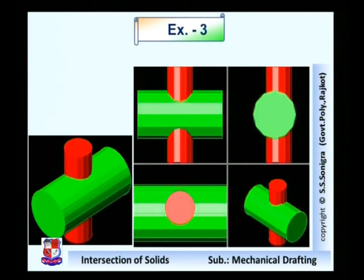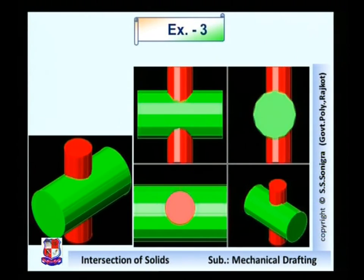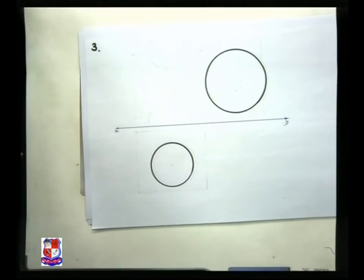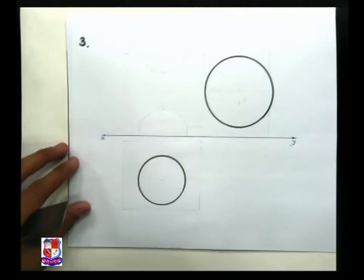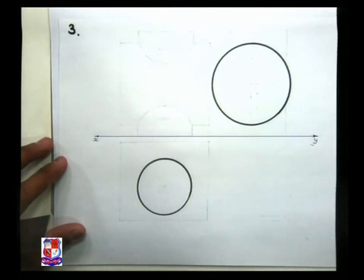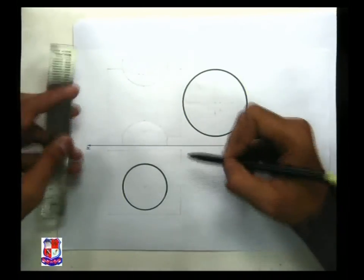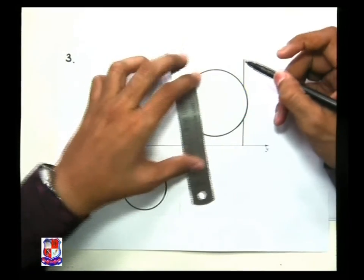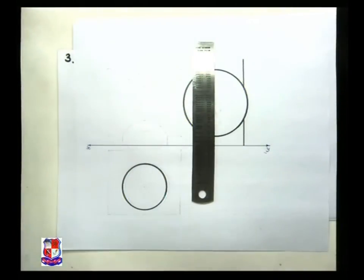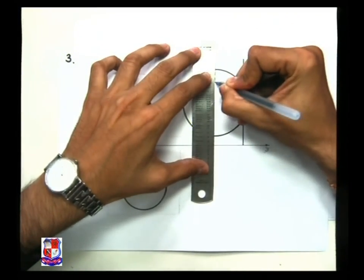For that, first we draw the first cylinder — the circle which would appear as a circle — having diameter as given in the data, that is 50mm. Similarly, we draw three views of this cylinder. We also draw three views of the other cylinder with its axis at a distance of 5mm from the axis of the red colored vertical cylinder. The front view of this solid would result like this — this is the front view. This is the side view of the cylinder. The axis of both cylinders are at a distance of 5mm, so first we draw the axis of the vertical cylinder.